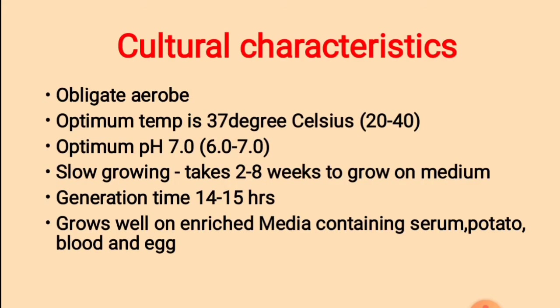Cultural characteristics: Mycobacterium tuberculosis is an obligate aerobe. The optimum temperature is 37°C and the temperature range is between 20 to 40°C. The optimum pH is 7.0 and the range is between 6.0 to 7.0. Mycobacterium tuberculosis is slow growing; it takes 2 to 8 weeks to grow on medium, and the generation time is 14 to 15 hours. It grows well on enriched media containing serum, potato, blood, and egg.